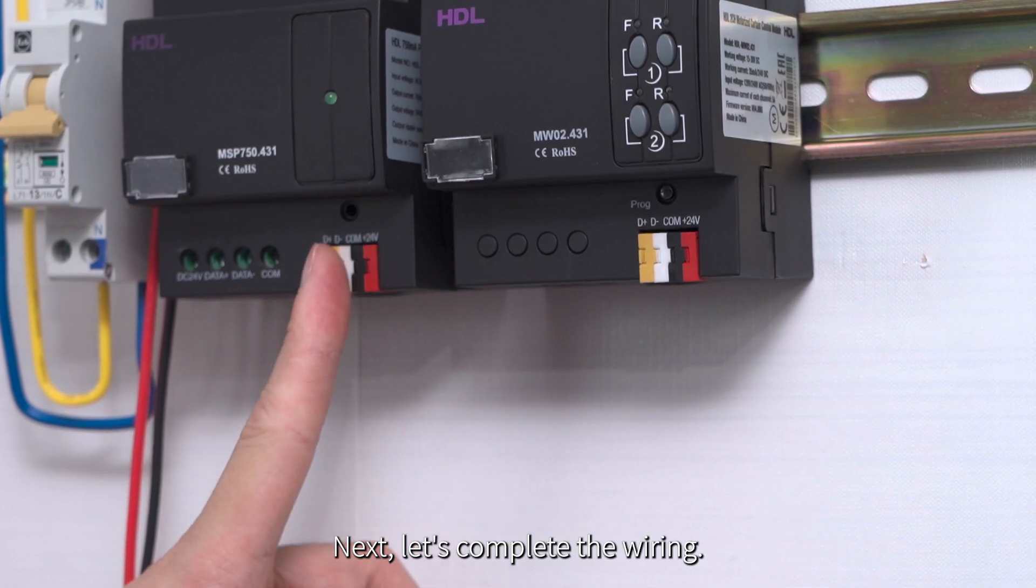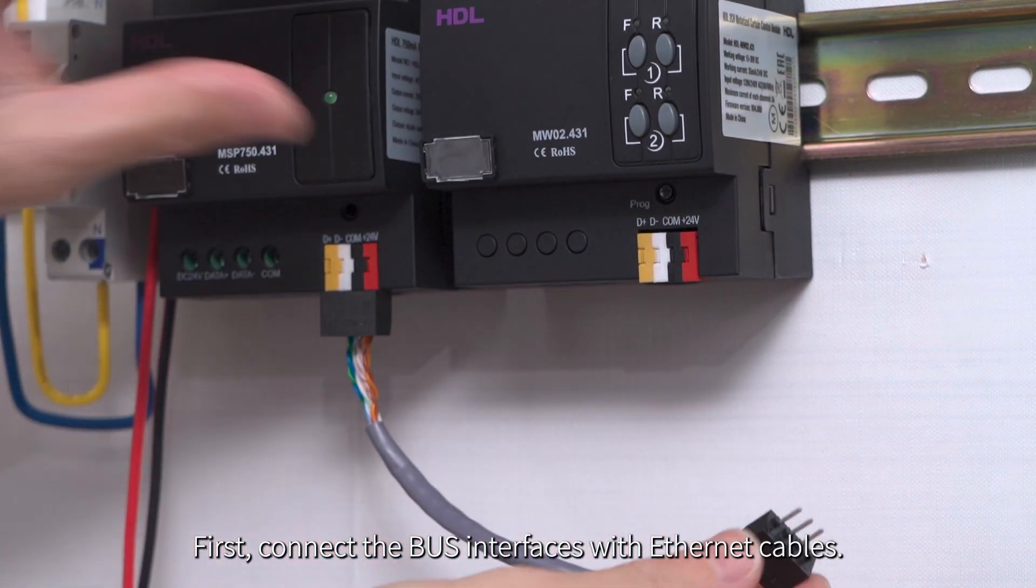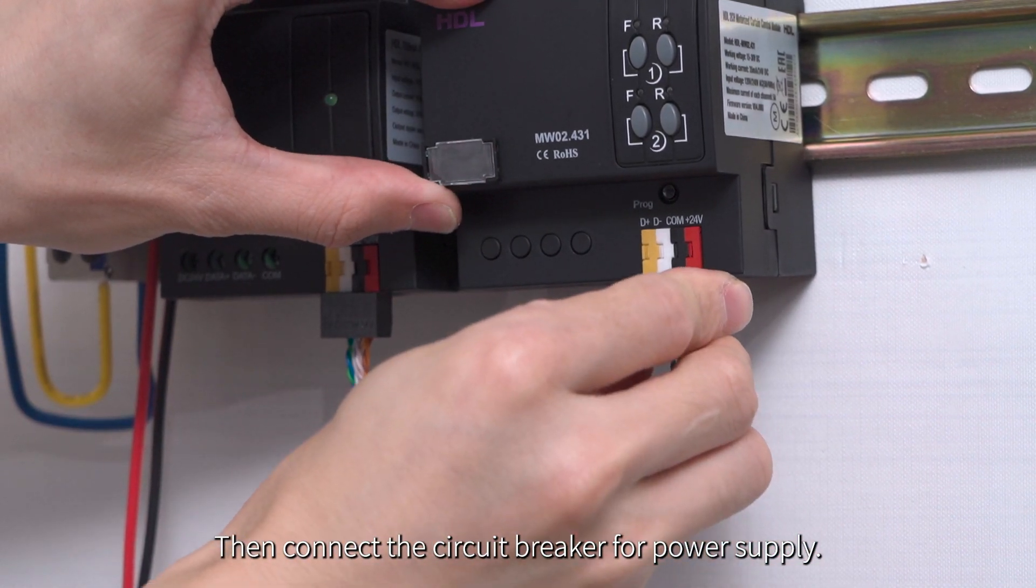Next, let's complete the wiring. First, connect the BUS interfaces with the Ethernet cables. Then connect the circuit breaker for power supply.